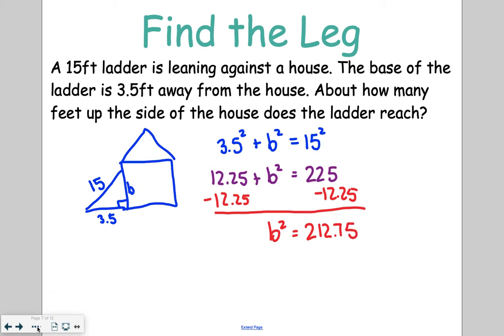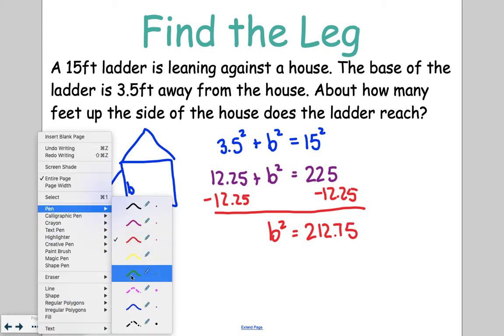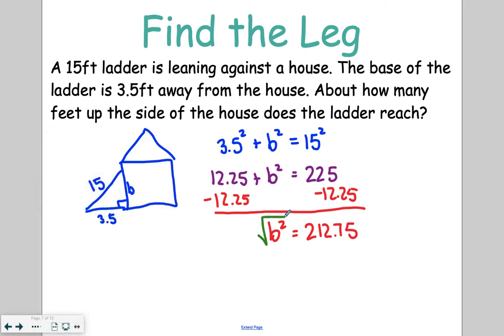Then you're going to go ahead and take the square root of both sides. And when you do that, you're going to get a very long decimal. So we're going to go ahead and round to 2 decimal places, which is going to give me 14.59 feet as the measurement for how far up the ladder goes on the side of the house.